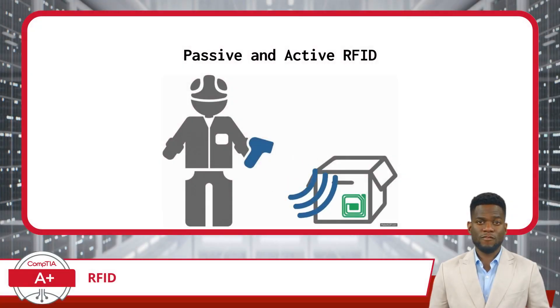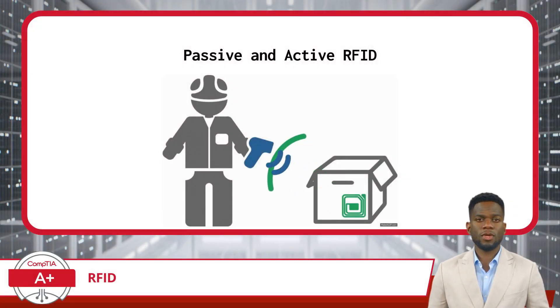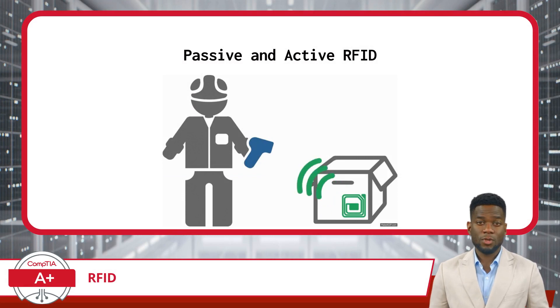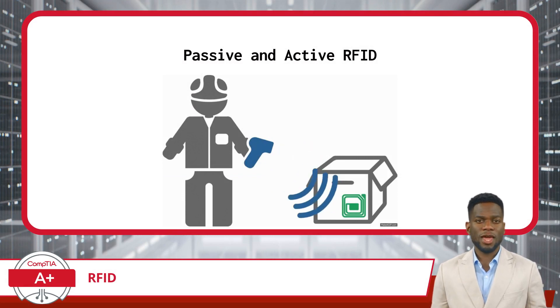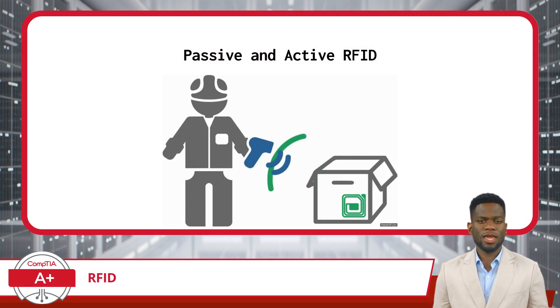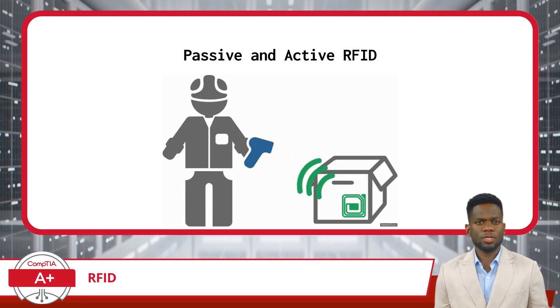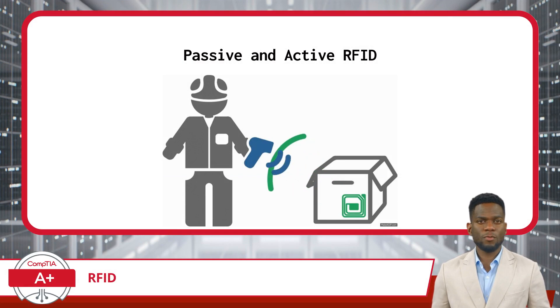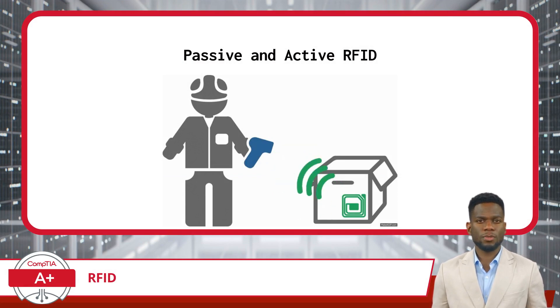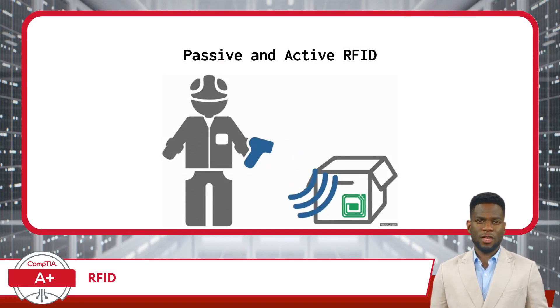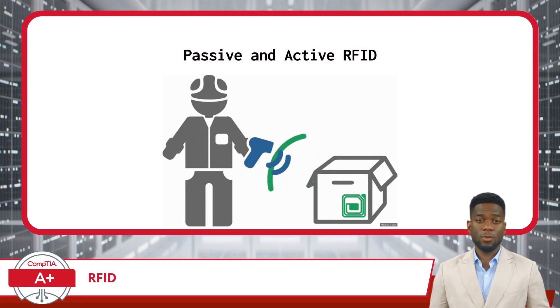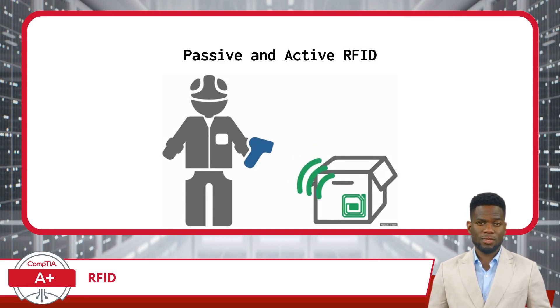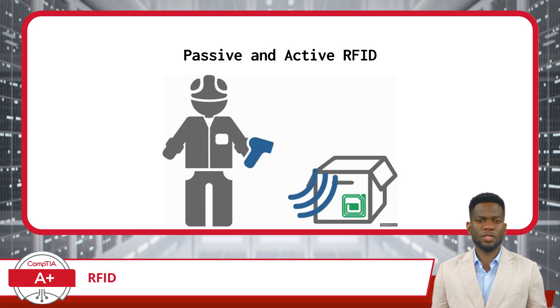When using RFID, an RFID reader scans a tag. The tag then responds back with information that has been programmed into it. RFID systems can be either passive or active in nature.